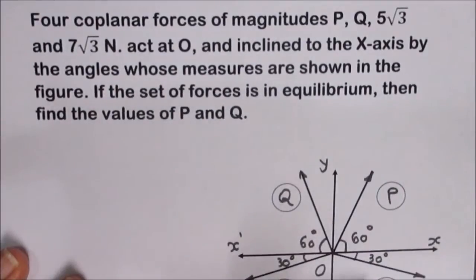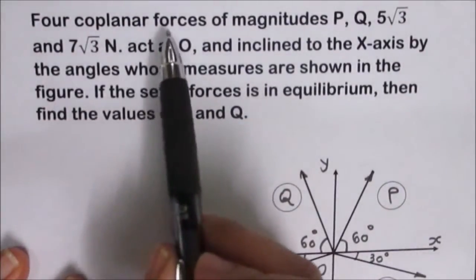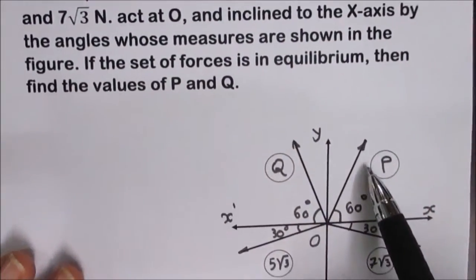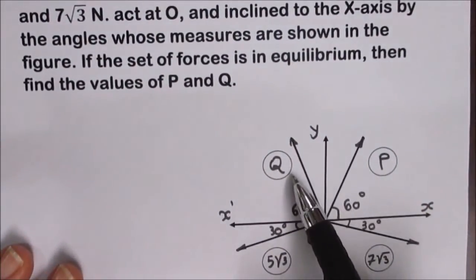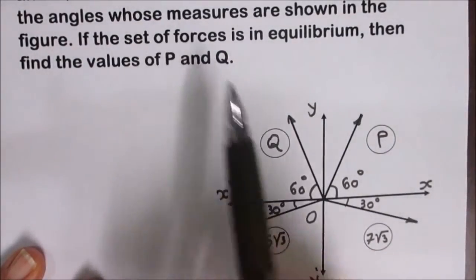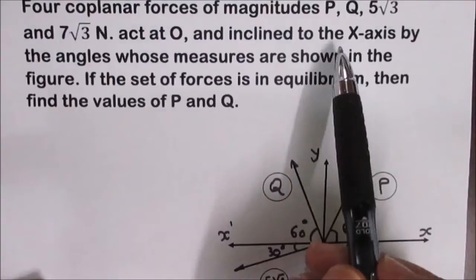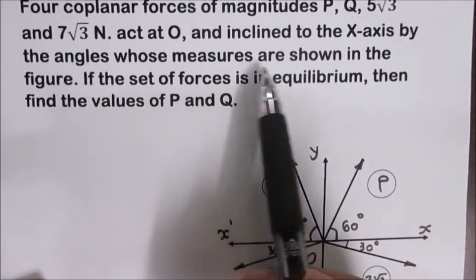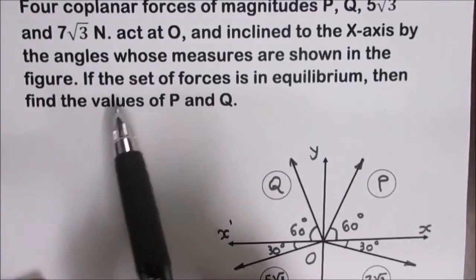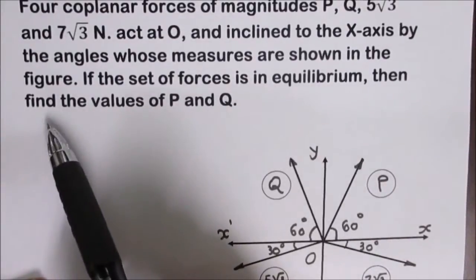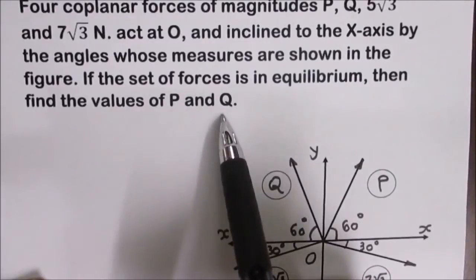Now for the example. In the opposite figure, we have four coplanar forces of magnitudes P, Q, 5√3, and 7√3 newtons. They act at point O and incline to the x axis by the angles whose measures are shown in the figure. If the set of forces is in equilibrium, find the value of P and Q.